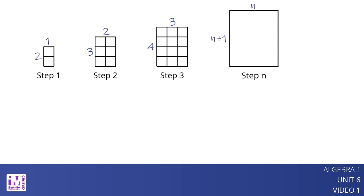So the number of squares at step n is n times the quantity n plus 1. This expression may not look like a quadratic expression with a squared term, but if we apply the distributive property, we can see that n times the quantity (n + 1) is equivalent to n² + n. We can also visually show that these expressions are equivalent by breaking each rectangle into an n by n square and an n by 1 rectangle.